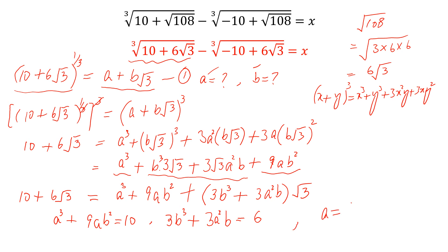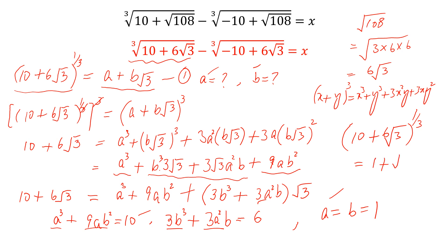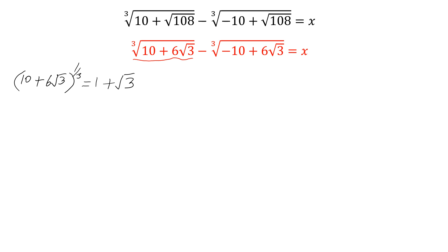Looking at these two equations, it is possible if we put A = 1 and B = 1. Substituting A = 1 and B = 1 into both equations gives us 10 and 6 respectively. So the values of A and B are both 1, and therefore (10 + 6√3)^(1/3) = 1 + √3. Let this be equation 2.